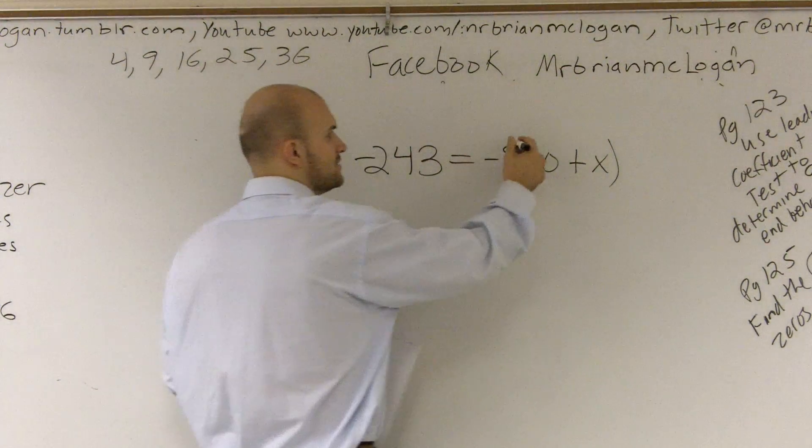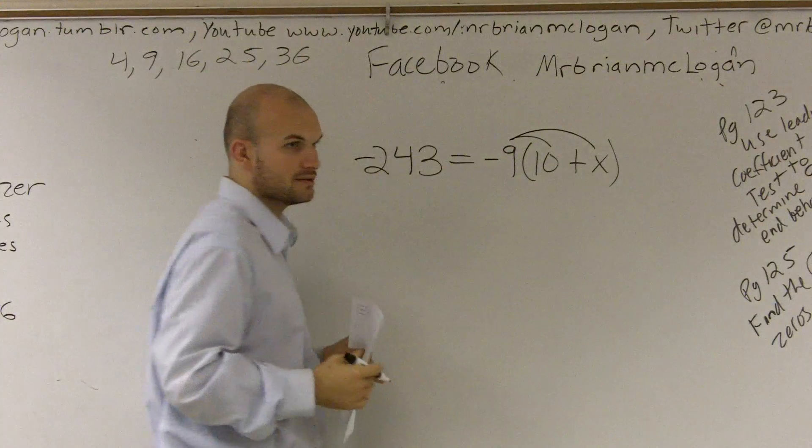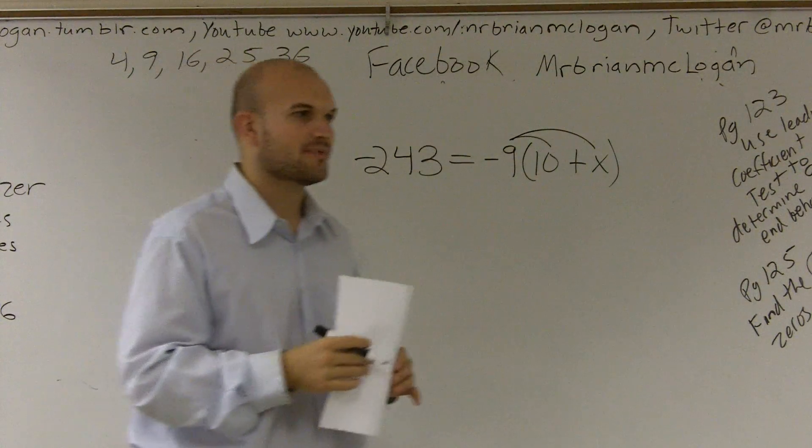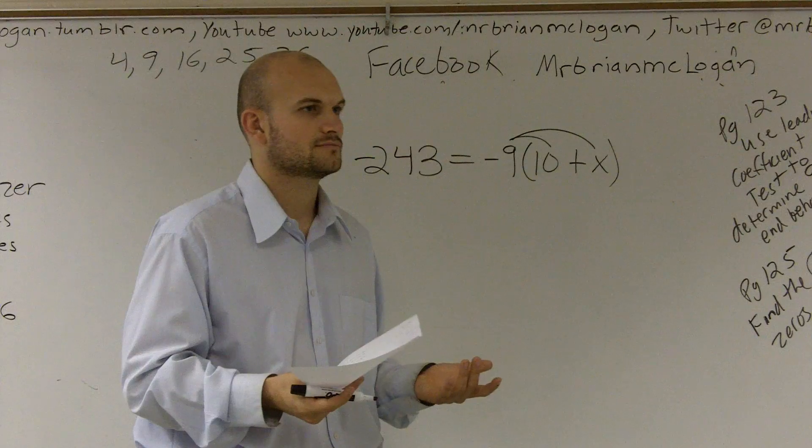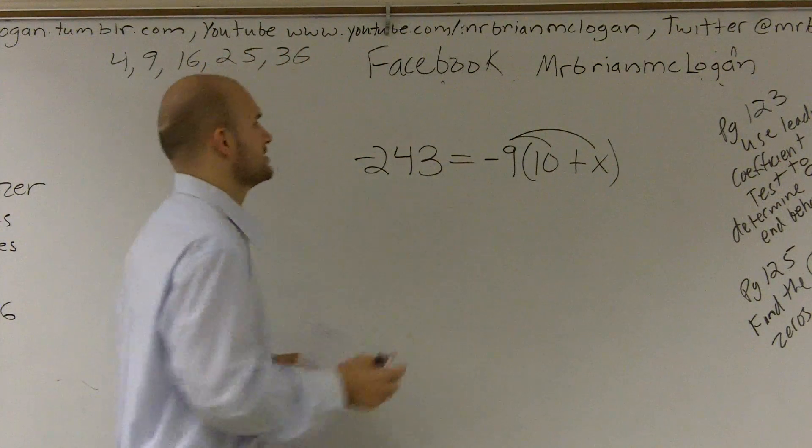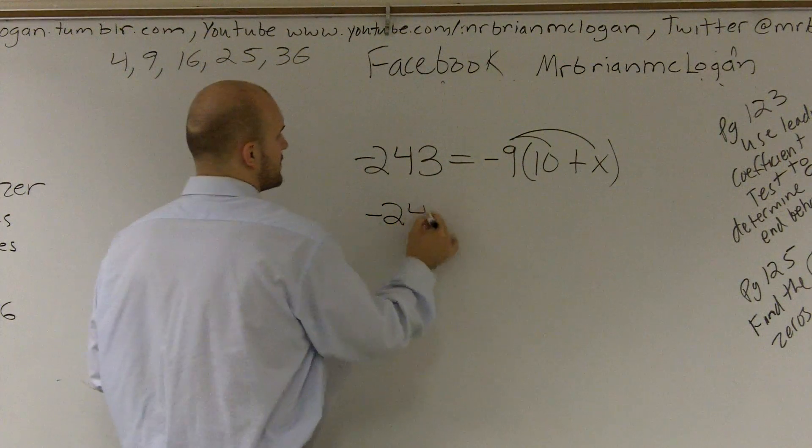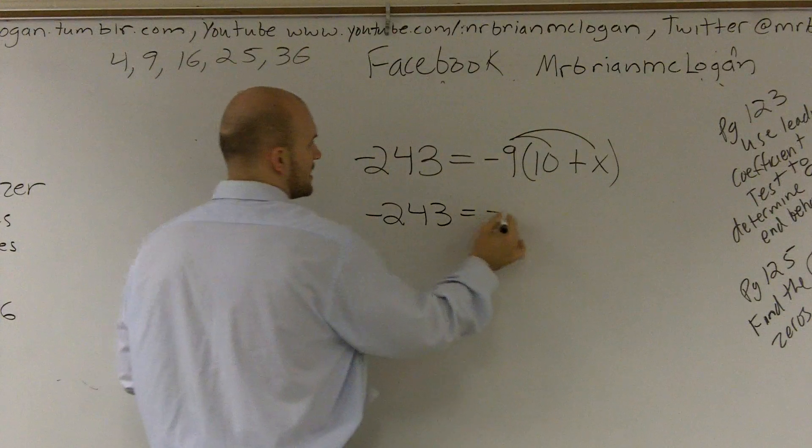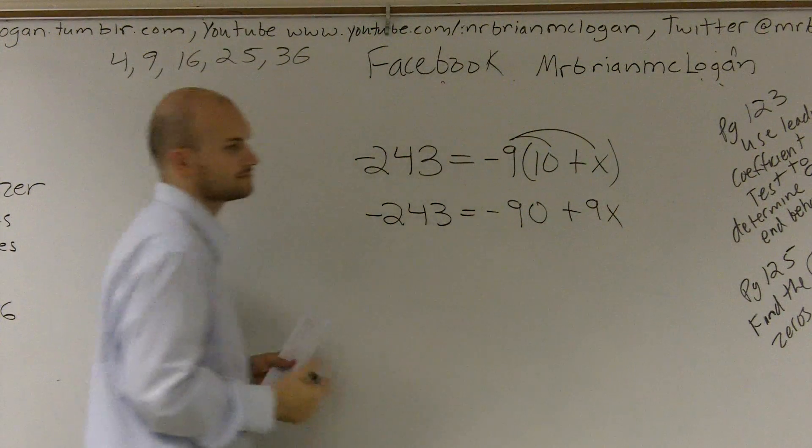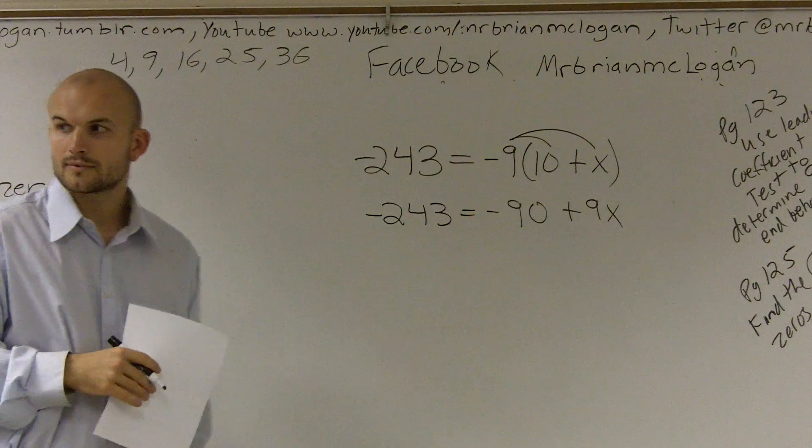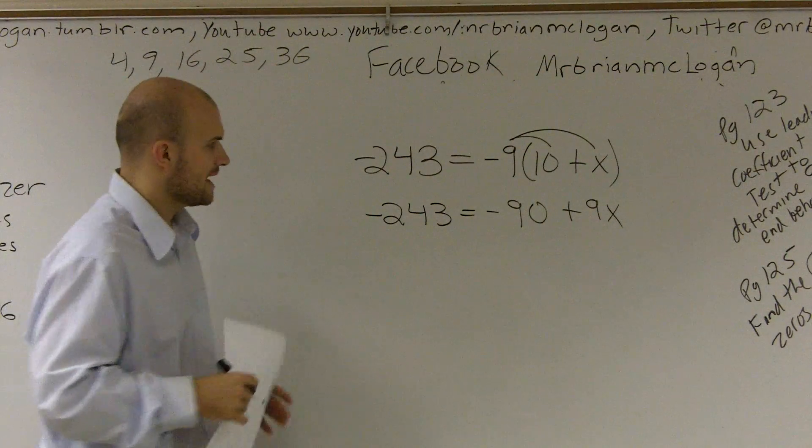And the way we need to simplify is we need to get rid of these parentheses. So what we do is we use our distributive property. We multiply whatever is outside of our parentheses to everything that's inside of the parentheses. So therefore I'm going to have negative 243 equals a negative 90 plus 9x. Alright?